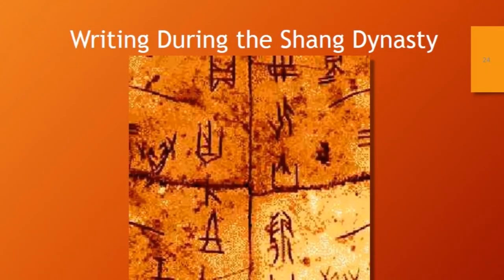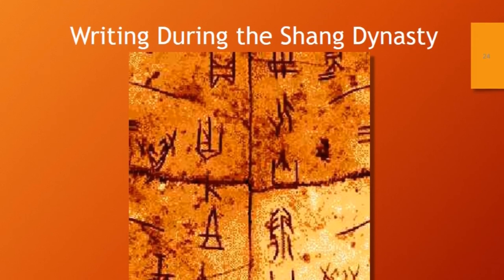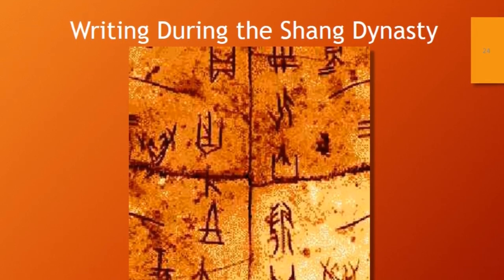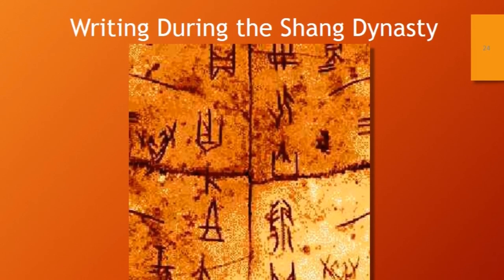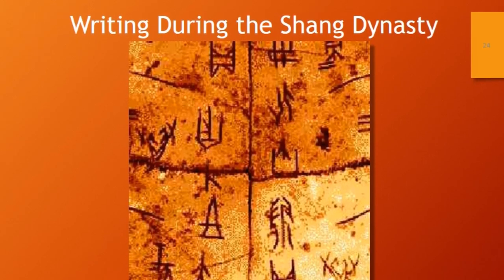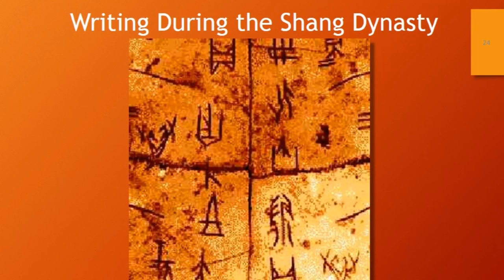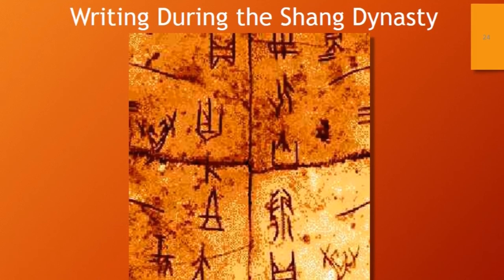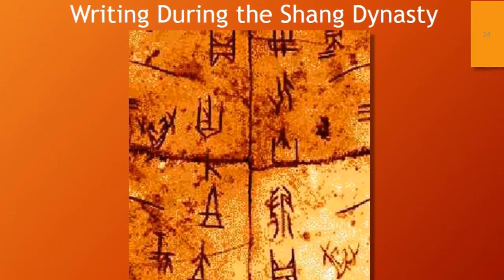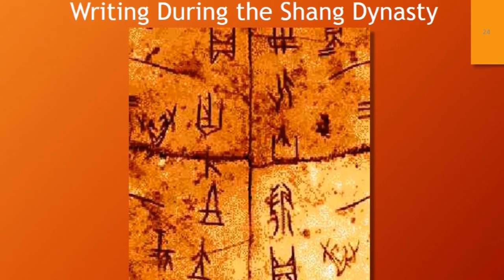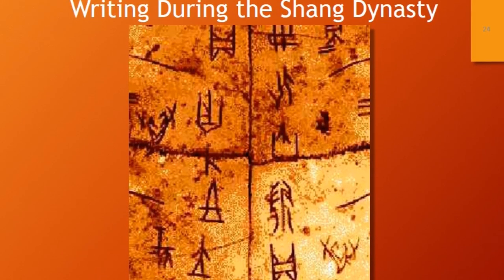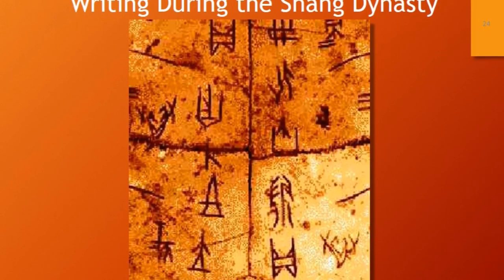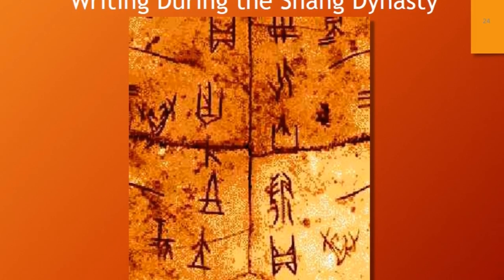One of the reasons we know so much about the Shang period is because they had writing. What you're looking at here is called an oracle bone — either turtle shells or a deer scapula. The Chinese wrote questions on them, tossed them into fire, and they cracked. Then a priest would come along and read the cracks — much like palm reading today — to tell the future. One example is asking whether it will rain today, which is an important question especially for military planning, since you don't want your military bogged down in mud.